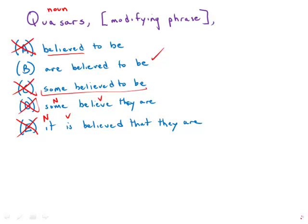So that leaves us with B. B is the only one that very simply follows the noun with a verb. Quasars are believed to be, et cetera. B is by far the strongest answer choice. You could call it a stellar answer choice.